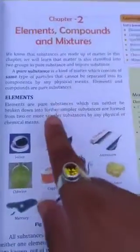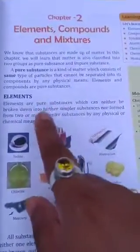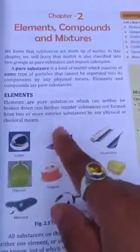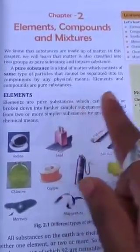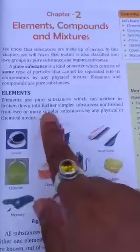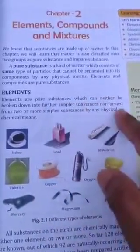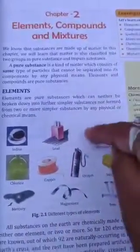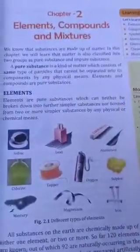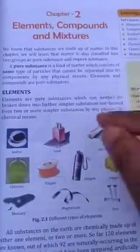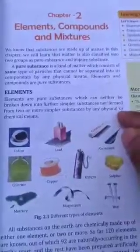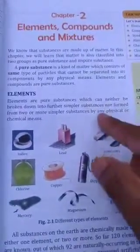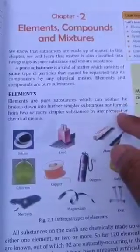So what is elements? Elements are pure substances which can neither be broken down into further simpler substances nor formed from two or more simpler substances. That means elements are pure substances that can neither be broken down into simpler form, and we cannot separate them by any physical or chemical means.